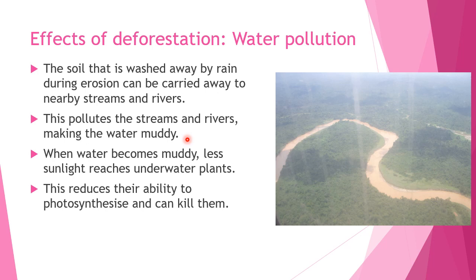Another effect is water pollution. Sambungan dari the previous slide — because ada soil erosion atu, if ia ampir river, the soil that is washed by rain during erosion can be carried away to nearby streams and rivers. Tanah yang runtuh atu boleh masuk ke dalam sungai. This pollutes the streams and rivers, making the water muddy — you can see here, the water is actually quite muddy. When water becomes muddy, less sunlight reaches underwater plants — ada tumbuh-tumbuhan di bawah sungai atu, because ada mud arah the water, inda banyak cahaya tambus sampai ke plants atu. This reduces their ability to photosynthesize and can kill them.